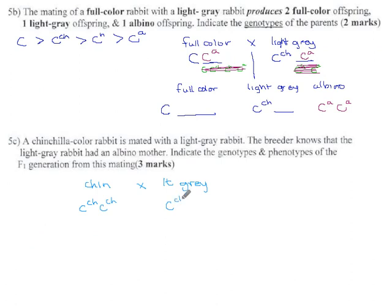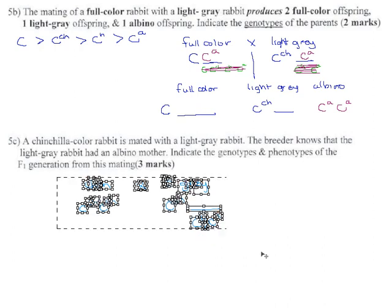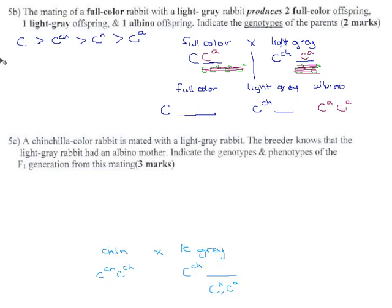So C^ch blank. And this can be either Himalayan or albino. I don't know which yet. Hopefully we can fill it in. The breeder knows the light gray rabbit had an albino mother. That's different. Okay. Let's scoot this down so we can fit another generation up above here. Okay. So here's one of the parents and their dear old rabbit mom was an albino, which means she had to be c^a c^a.